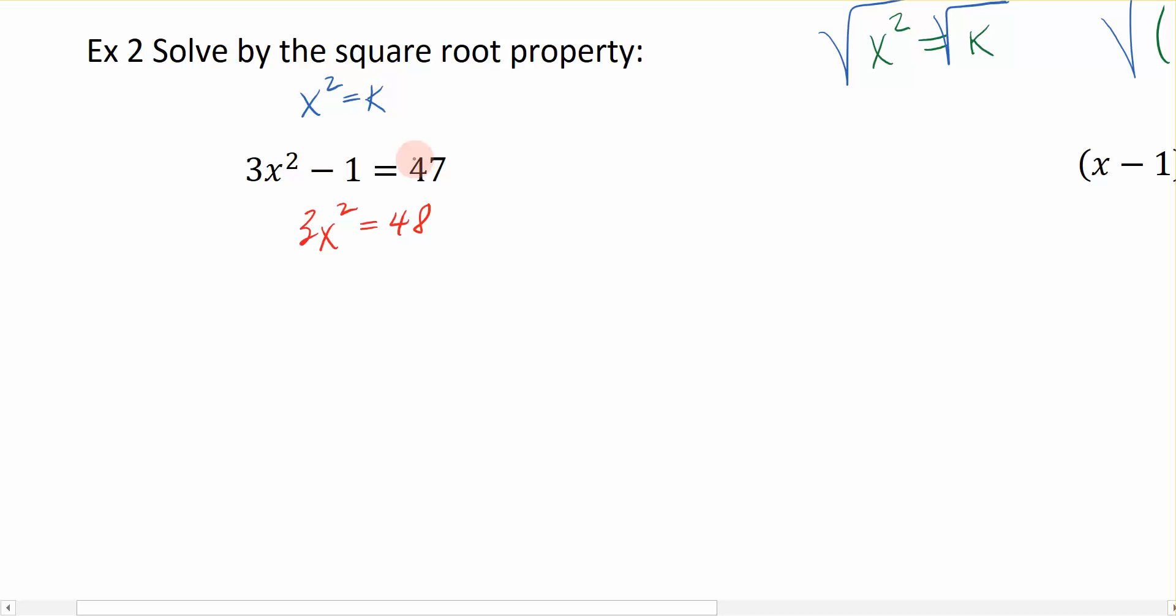But I'm still not there yet because notice that my variable has a coefficient of 1 in this case. Down here, my variable has a coefficient of 3. So I'm going to divide both sides by 3, giving me x² = 16. Now I have my quadratic equation in the form x² equals a constant, and I can just take the square root of both sides to solve for x.